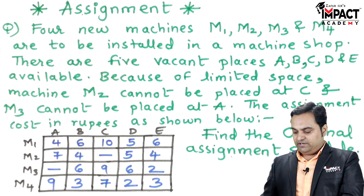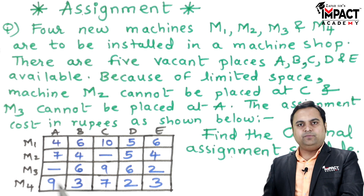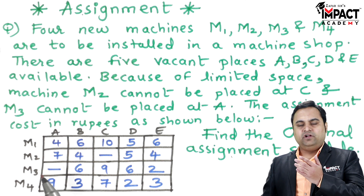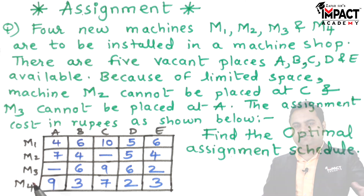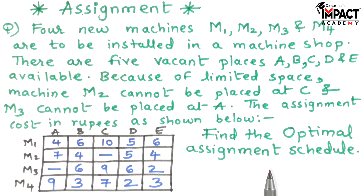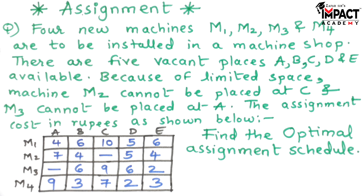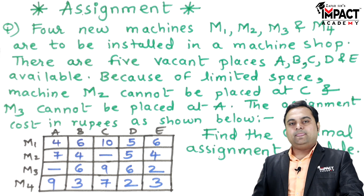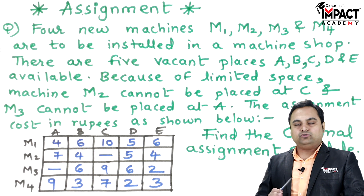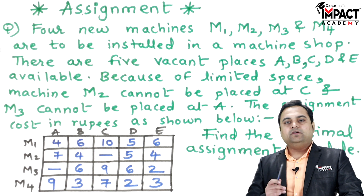The assignment cost in rupees is shown in the table below. The cost can be expressed in terms of rupees, hundreds, thousands, lakhs, etc. We have to find the optimal assignment schedule — that is, assign these four machines to the five locations in such a way that the cost is minimized.